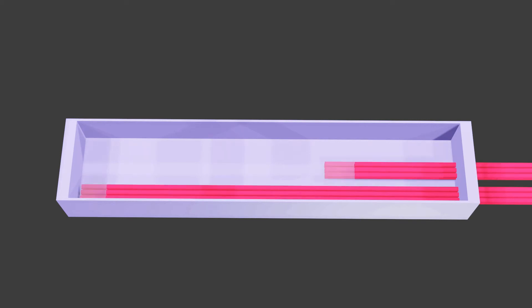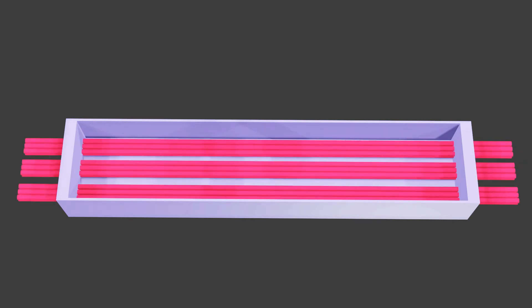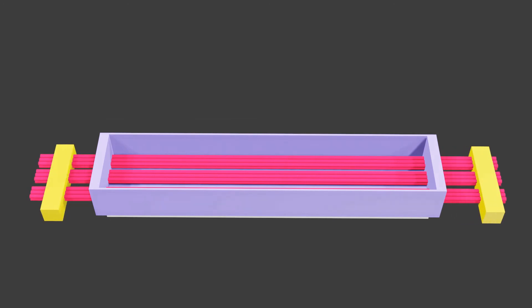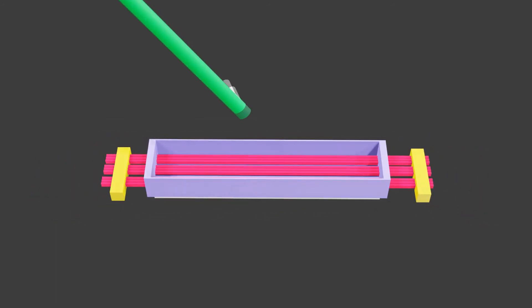In pre-tensioned concrete, firstly steel wires are pulled which will further act to produce compressive stress. After stretching of the steel wires, concreting is done.